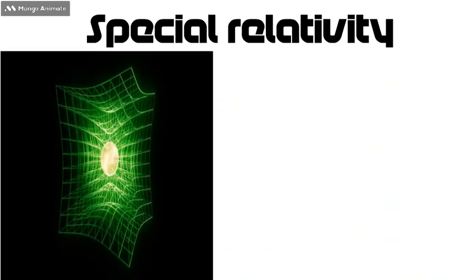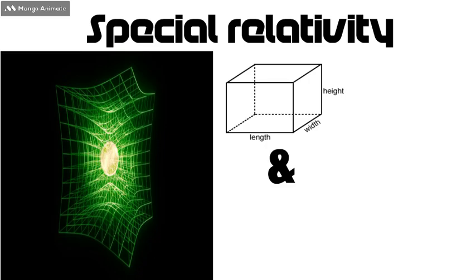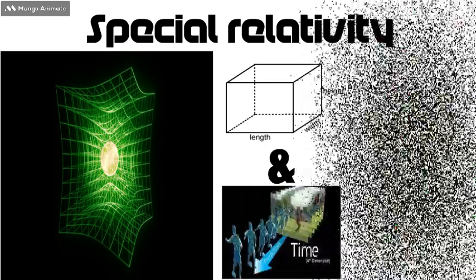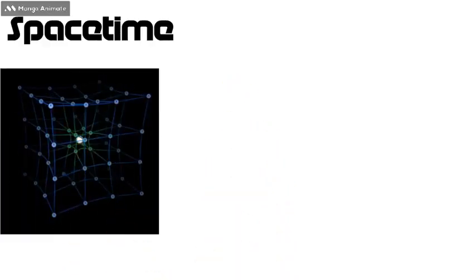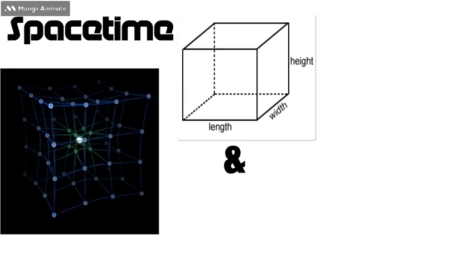Special relativity is a theory of the structure of space-time. Space-time is a mathematical model that combines three dimensions of space and one dimension of time into a single four-dimensional manifold, which makes our world a four-dimensional reality. A point in space-time is called an event and is described using three dimensions of space and one of time.